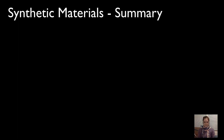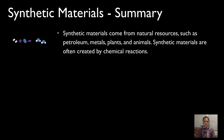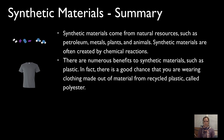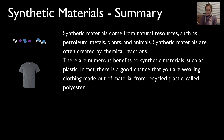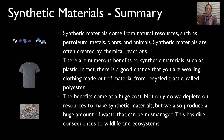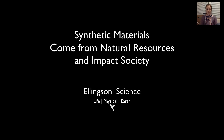To summarize: synthetic materials come from natural resources such as petroleum, metals, plants, and animals, and are often created by chemical reactions. There are numerous benefits to synthetic materials — in fact, if you check the tag on your shirt or pants, there's a good chance your clothing is made from polyester, which is recycled from plastics. But these benefits come at a huge cost: we deplete natural resources and produce enormous pollution, mostly from waste mismanagement, which can have dire consequences on ecosystems. Remember to recycle whenever possible — synthetic materials come from natural resources and impact society.